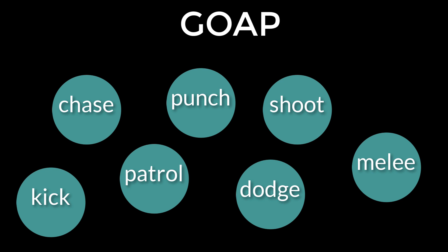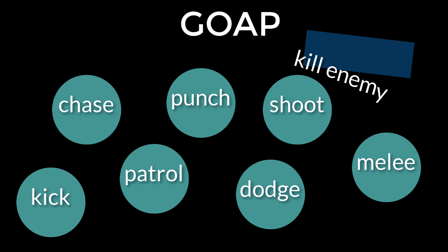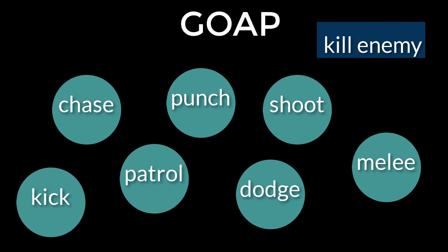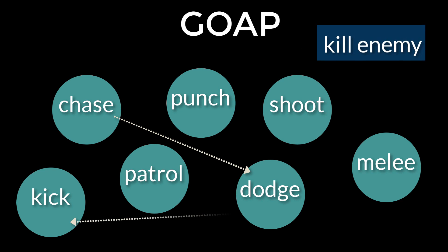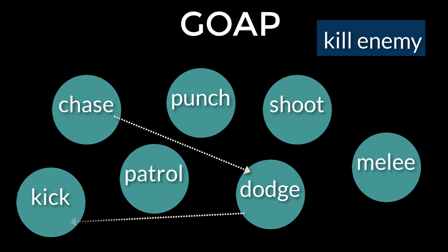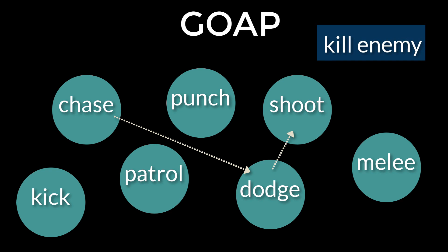For example, if an agent were asked to kill an enemy and it didn't have a weapon it could choose a physical fight. However, if it did have a weapon a different set of actions would become available.